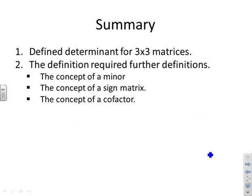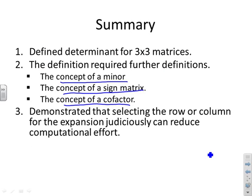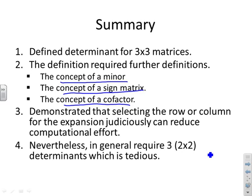In summary, we've defined a determinant for a 3x3 matrix, which required further definitions: the concept of a minor, the concept of a sign matrix, and the concept of a cofactor — all three are needed to compute the determinant. We've also demonstrated that selecting the row or column for expansion judiciously can reduce computational effort. In general, calculating determinants for 3x3 matrices is somewhat tedious because it requires, in general, three 2x2 determinants.